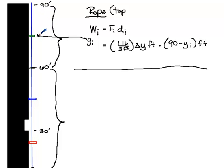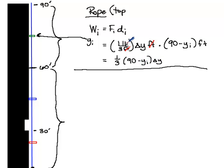So this distance from 90 down to y_i is just 90 minus y_i. Once units cancel, this becomes one-third times (90 minus y_i) times delta y, and the units left are foot-pounds, which is exactly what you want for work. That's how much work it takes to lift any slice between 60 and 90 feet.